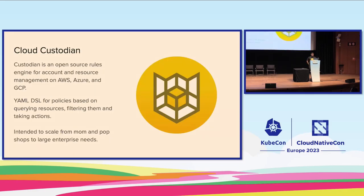Quick show of hands — who has not used Cloud Custodian? To provide a quick overview: it is an open source rules engine for cloud management using simple YAML policy DSLs. It allows you to find interesting resources by doing arbitrary filtering — for example, take a set of EC2 instances in AWS, find those that are publicly accessible to the internet, have IAM roles attached that allow creation of IAM users, and don't have encrypted disks.